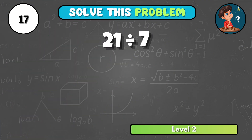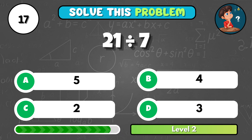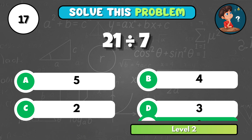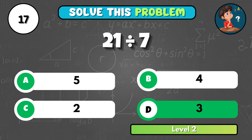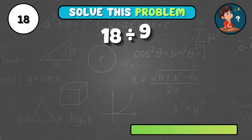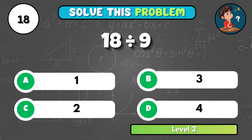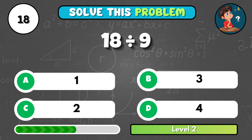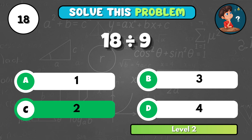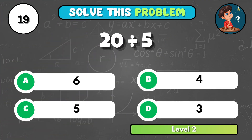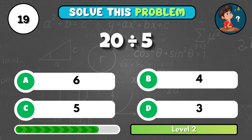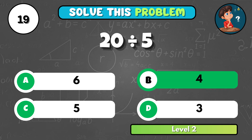Time to solve twenty-one divided by seven — what's the answer? That comes to D, three. Can you figure out eighteen divided by nine? It's C, two. Let's see if you know: twenty divided by five equals what? That's B, four.